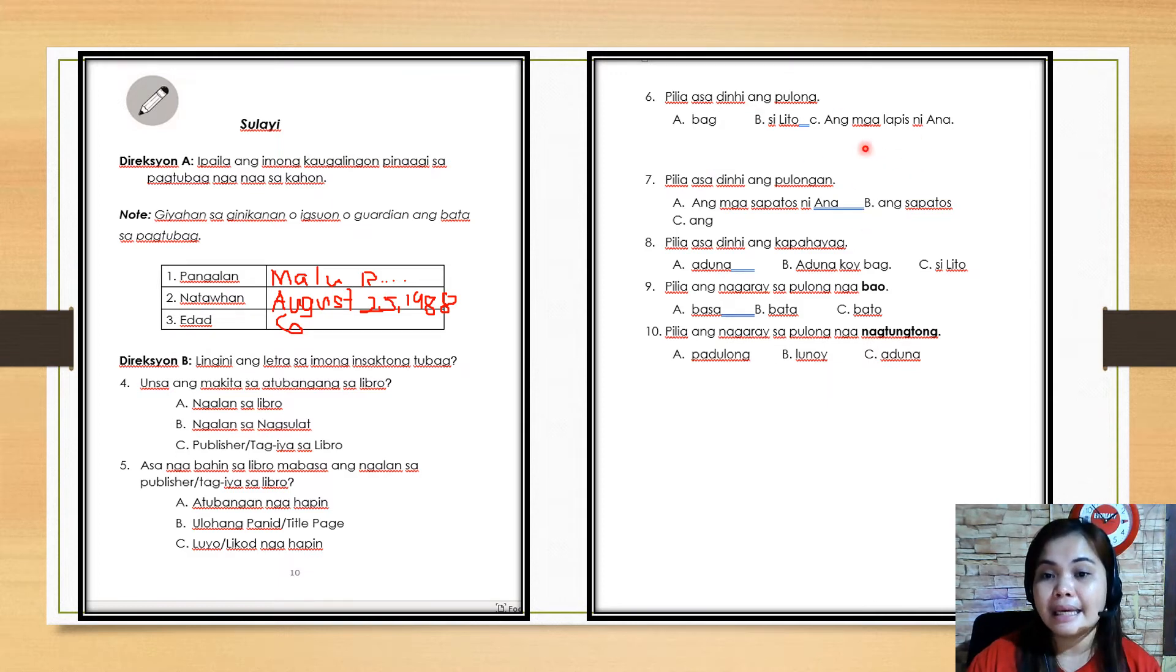Next number three: pili a ang asa din hi ang pulong. You choose which of these choices is the word. When we say word, only one. Letter A: bag, letter B, letter C: ang mga lapis ni Ana. Just encircle your correct answer. Number seven: which is a phrase?